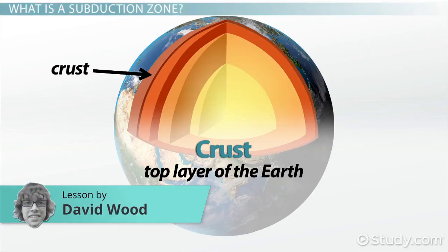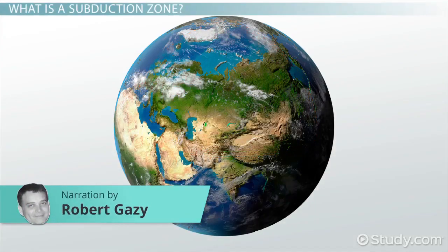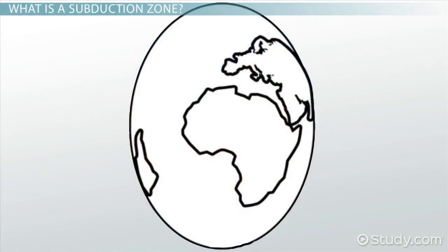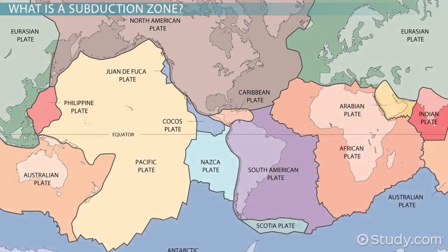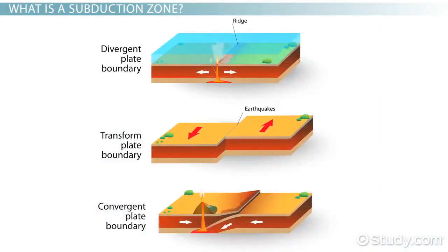The top layer of the earth is called the crust, but as much as we like to think of the surface of the earth as one continuous thing, it's not. The world is more like an eggshell cracked all over. These sections of the earth's crust are called tectonic plates, and they float on a sea of hot magma. The cracks in the egg are like boundaries between plates. There are three main types: convergent boundaries, where plates move towards each other;